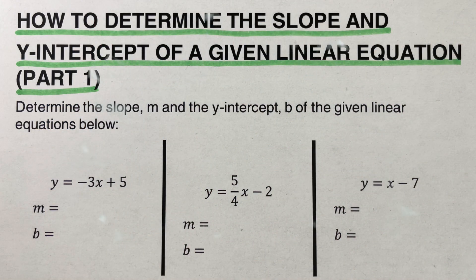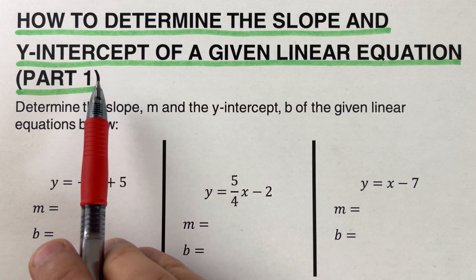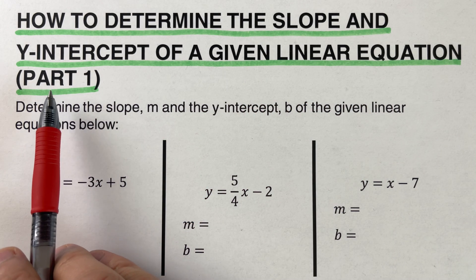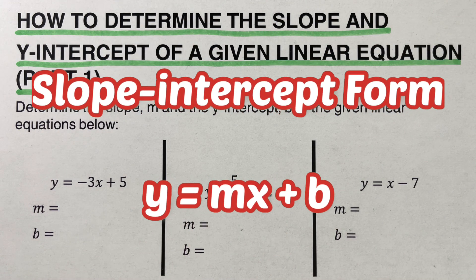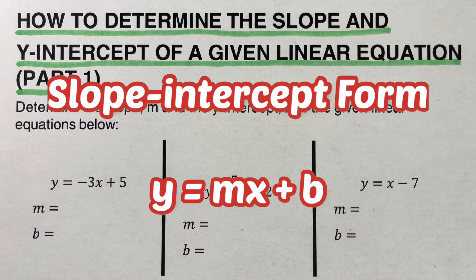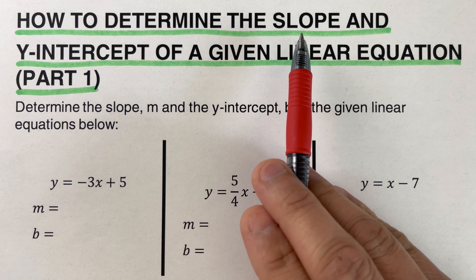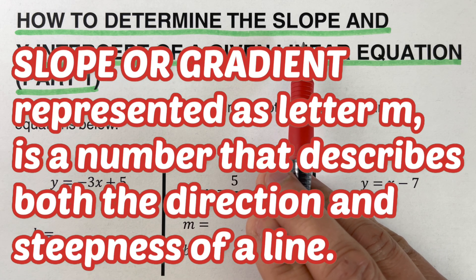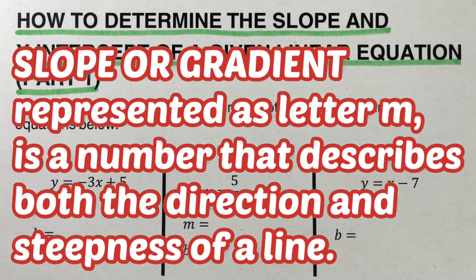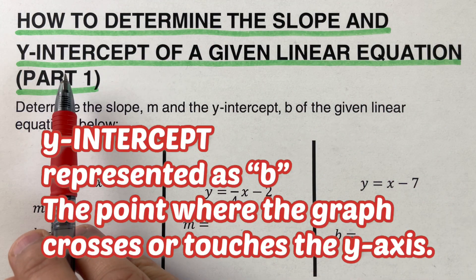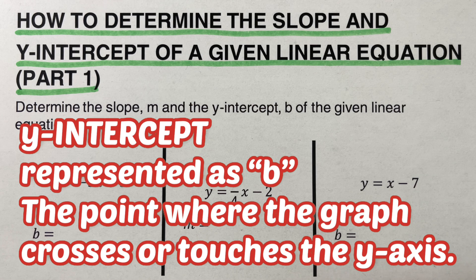Hello everyone. In this video we are going to determine the slope and y-intercept of a given linear equation. This is the first part, where the equation is given in slope-intercept form — the form y = mx + b. Slope, otherwise called gradient of a line, is usually represented as the letter m, and describes both the direction and steepness of the line. The y-intercept, represented as letter b, is the point where the graph crosses the y-axis.